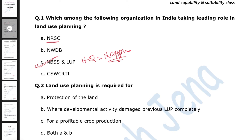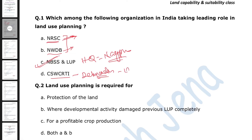NRSC and NWDB are involved in mapping wasteland development in India — they also develop the Wasteland Atlas. NRSC uses remote sensing techniques to map crops, drought zones, wasteland, and desertification. NWDB is mainly associated with planning and mapping of wasteland development. CSWCRTI is Central Soil and Water Conservation Research and Training Institution — it was established in 1974 and is associated with soil water conservation.